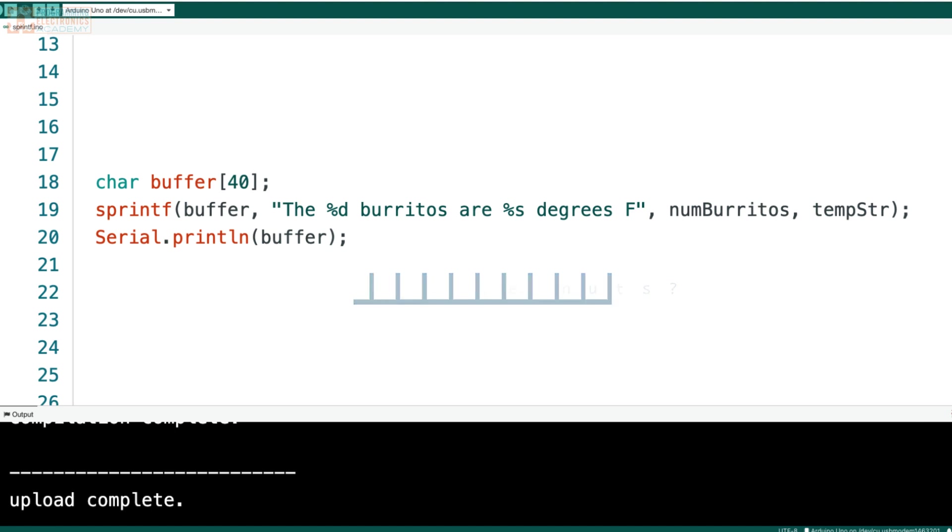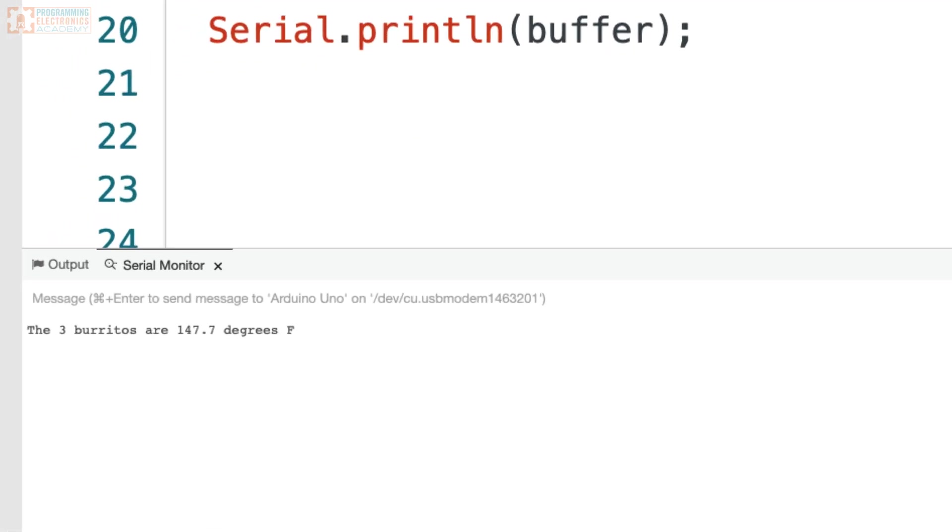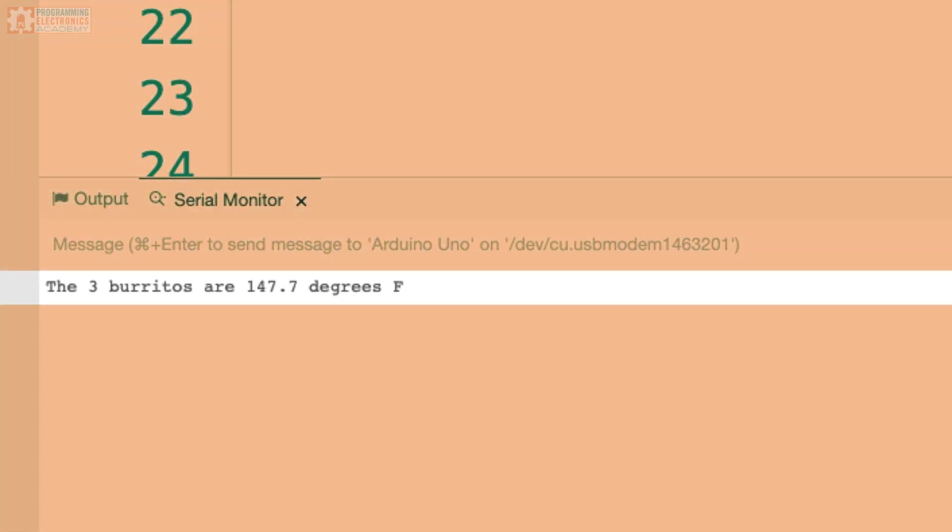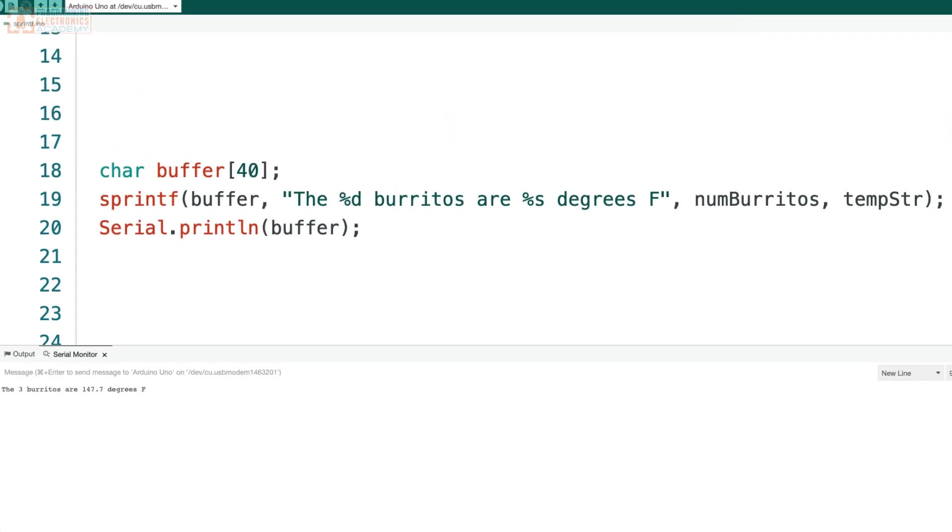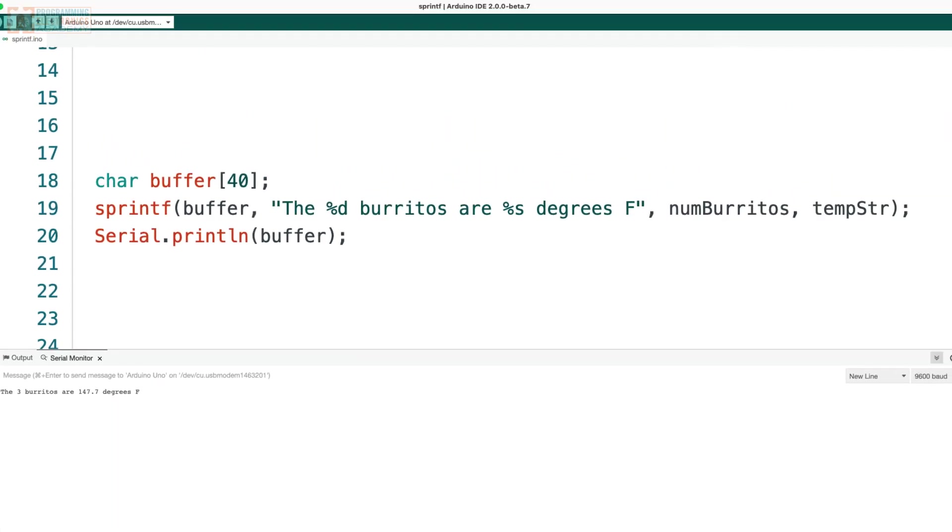So now with these three lines of code, we can open up the serial monitor and see that the string has been inserted with the variables showing up pretty nicely. So using just these three lines of code, we can insert a bunch of variables into a single string and print it out to the serial monitor and it comes up nicely formatted.